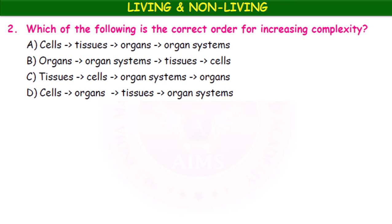Which of the following is the correct order of increasing complexity? Complexity means increase in size or structure and function. The correct order goes from smaller to bigger: cells combine to form tissues, tissues combine to form organs, and organs combine to form organ systems. So option A — cells, tissues, organs, organ systems — is the right answer.